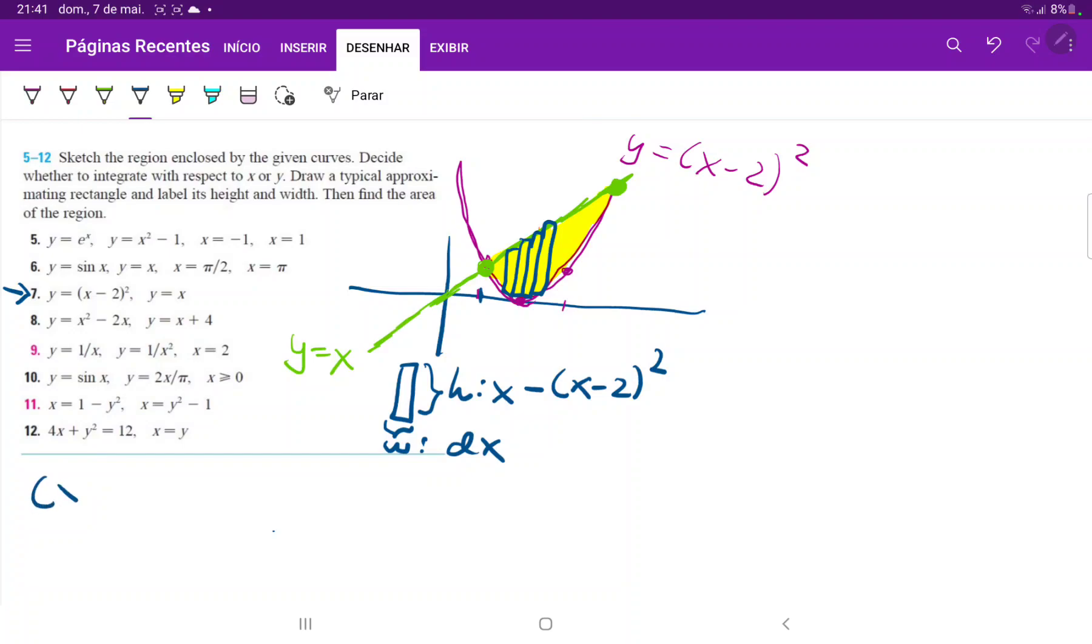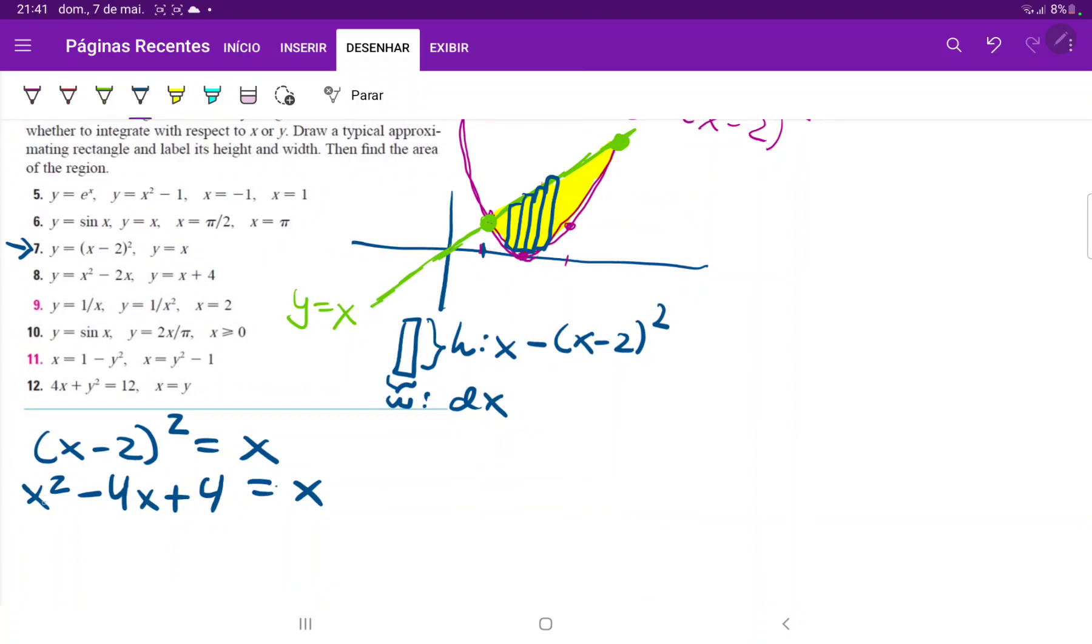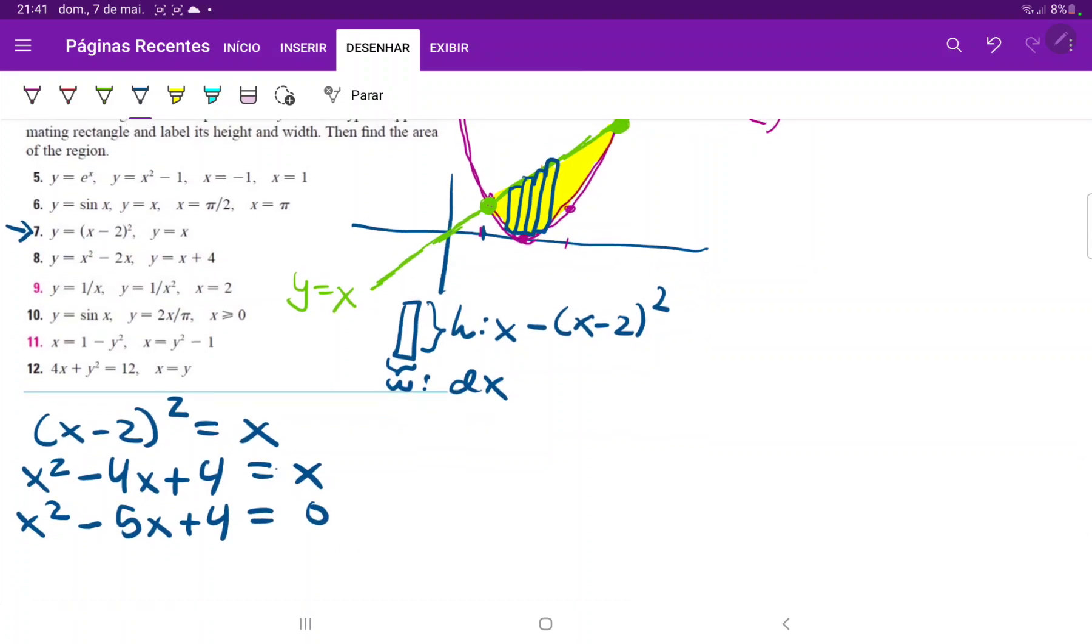So to find this let's just set these equations equal to each other. x minus 2 squared is equal to x. Now we'll have to expand the left side, so that is x squared minus 4x plus 4 is equal to x. So we'll bring everything over to the left side: x squared minus 5x plus 4 is equal to 0. Now thankfully this does factor very nicely because when we multiply them we get plus 4 and when we add them we get minus 5. So this is x minus 4 times x minus 1 is equal to 0.